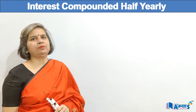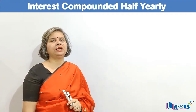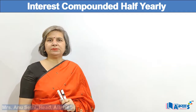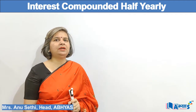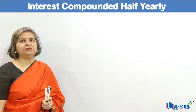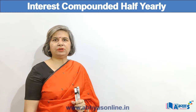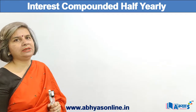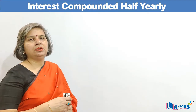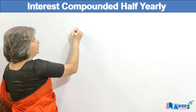I am going to discuss the concept of finding compound interest when it is compounded half yearly. Normally compound interest is calculated after one year, but in this concept we are saying it is being compounded half yearly. The basic definition of compound interest is to find the interest after a definite period of time and then add that amount to the principal to calculate the new amount. This is how it differs from simple interest.